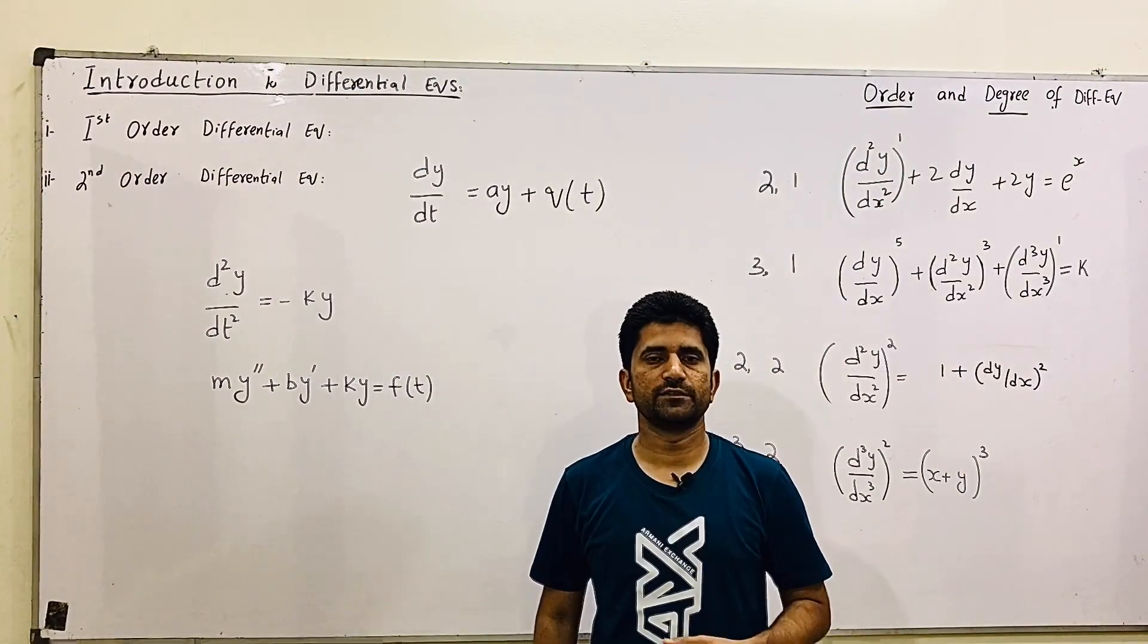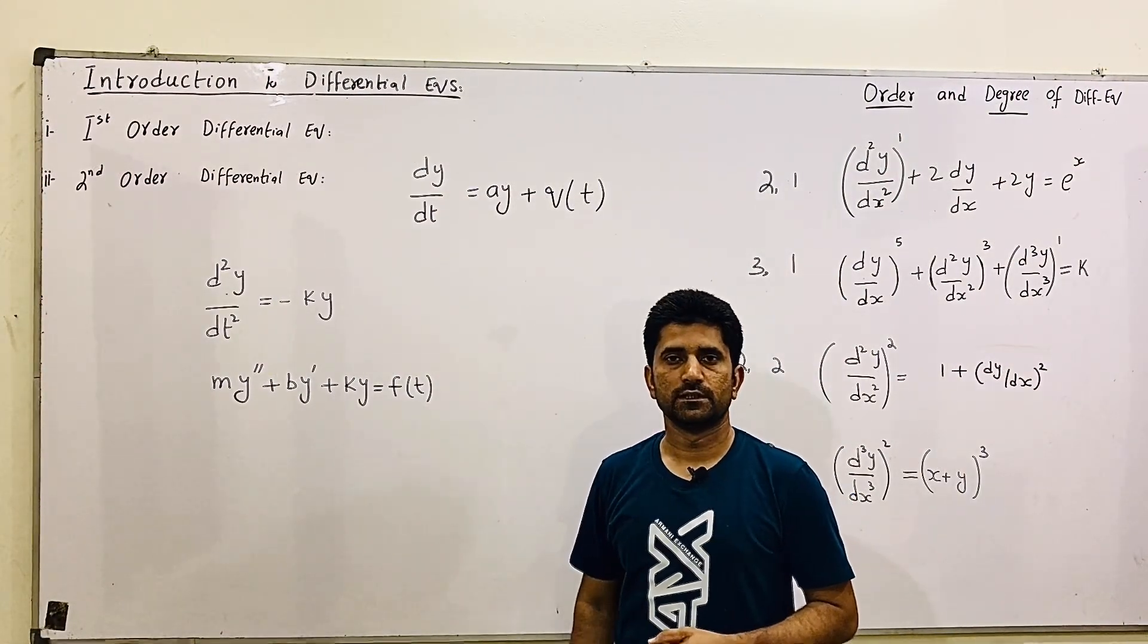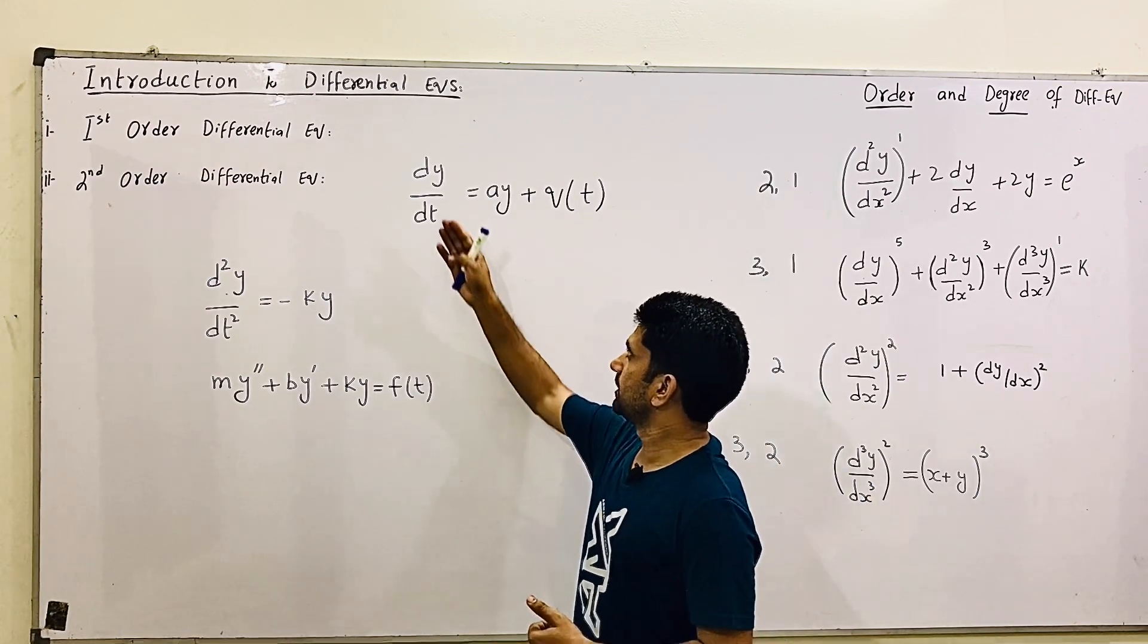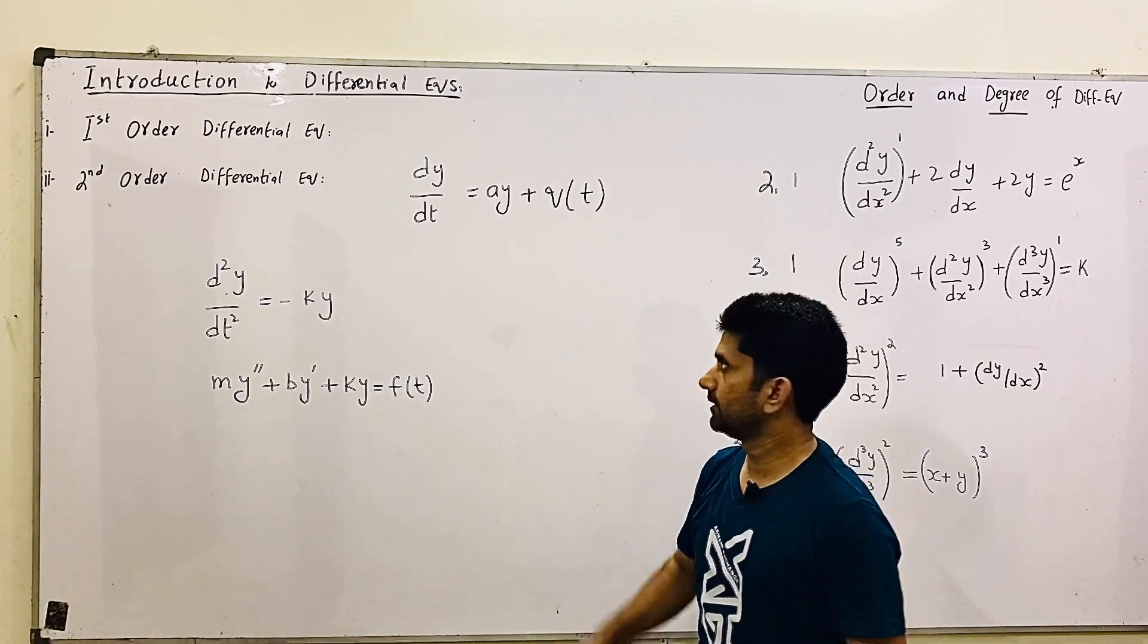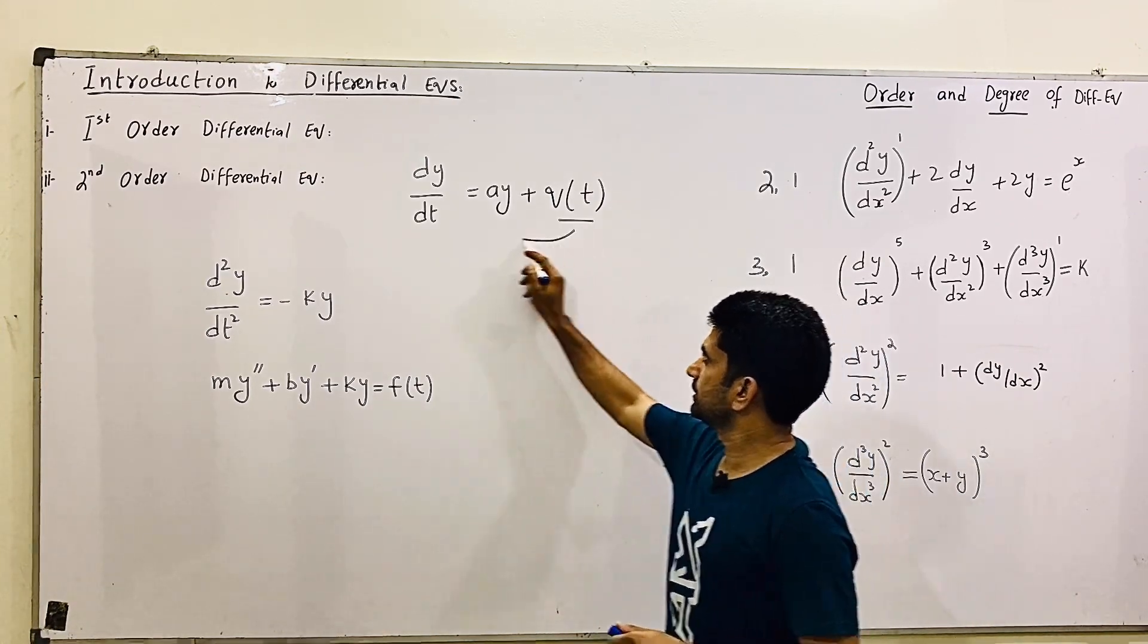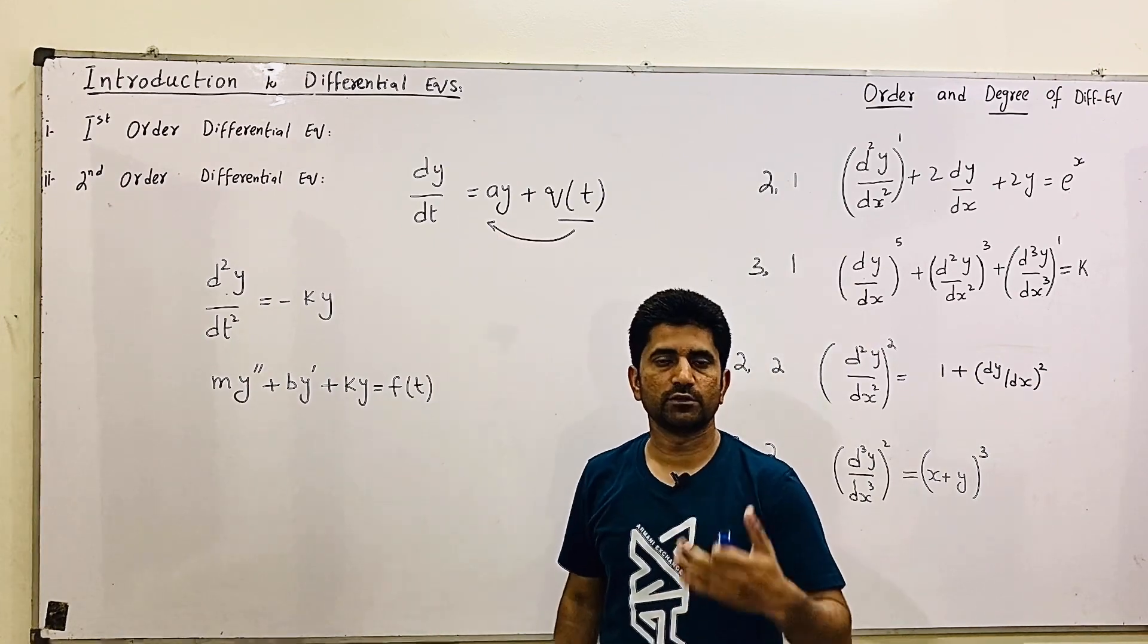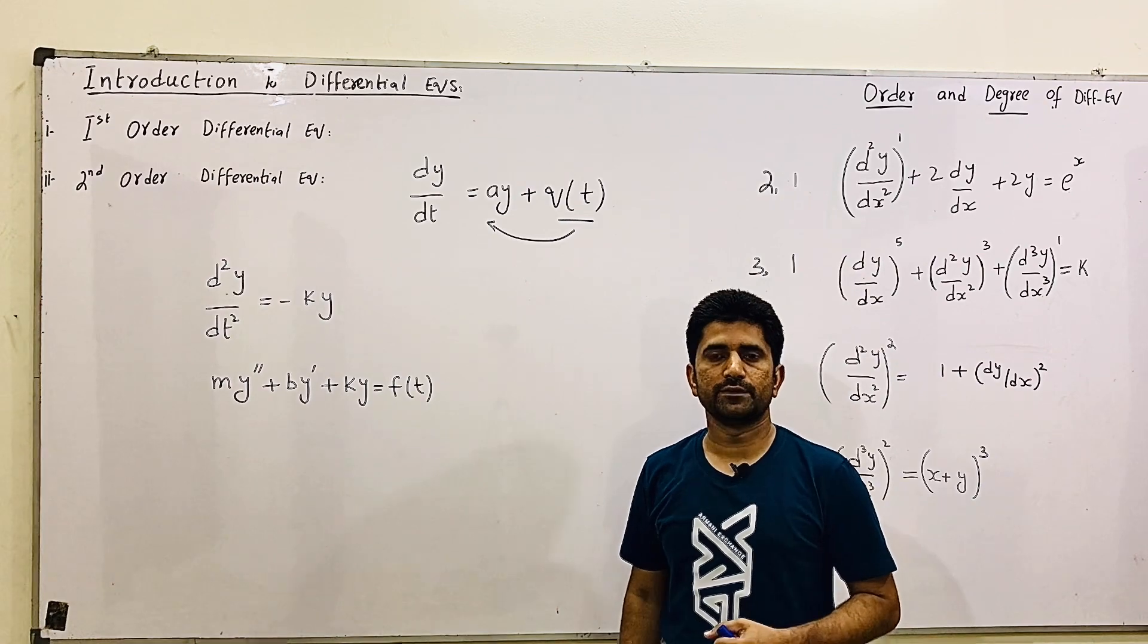First order differential equation means first derivative come into the equation. dy by dt means the slope, the rate of change of y as time goes forward. Where q of t is the input. It goes into the system. It oscillates, grow or decay. Whatever y of t does.